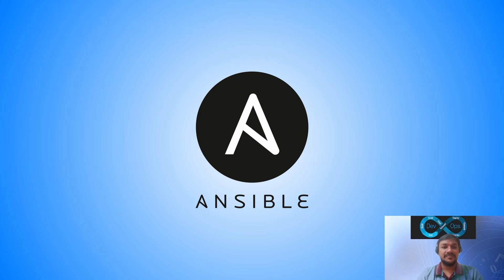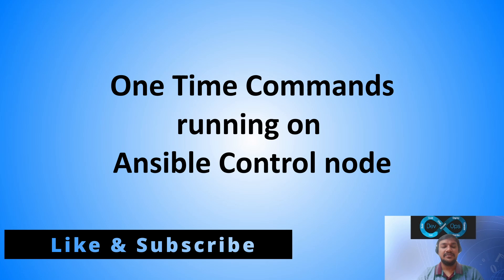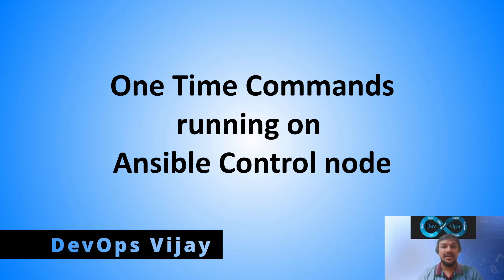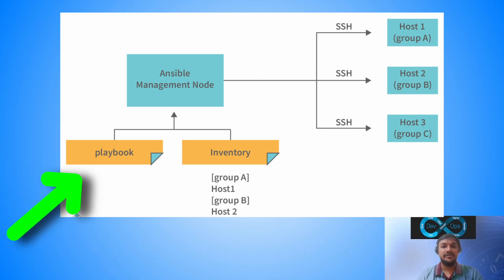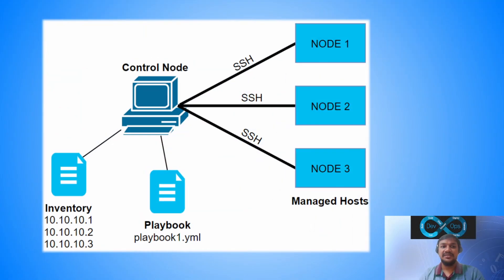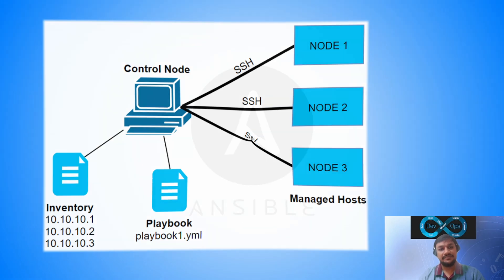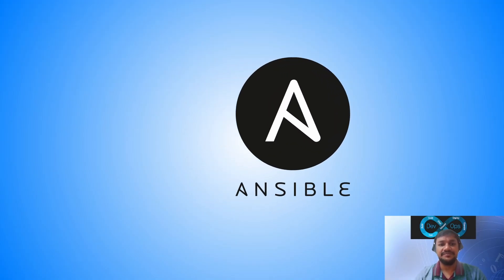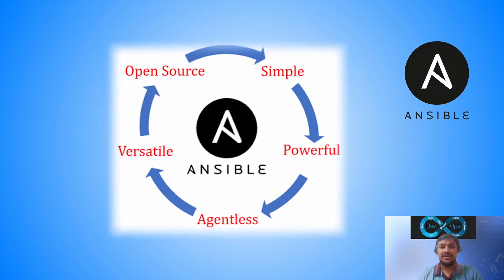First, what are ad hoc commands? Ansible ad hoc commands are like one-time commands run on the Ansible control node. As you already know, Ansible is known for its powerful playbooks that automate complex configuration, but it also offers a handy tool for quick and one-time tasks called ad hoc commands. These commands are executed directly on the Ansible control node, letting you interact with your managed systems without needing full-blown playbooks. Think of them as a quick way of automation — you can run them on a single machine or target a group of servers simultaneously.